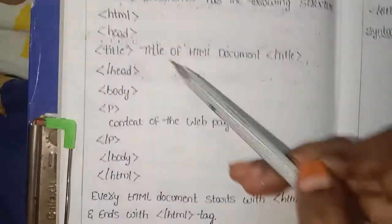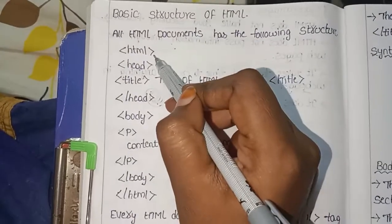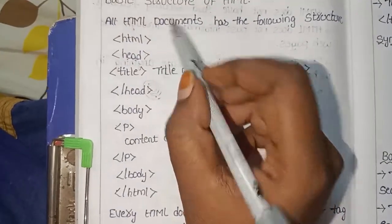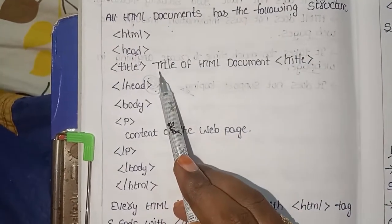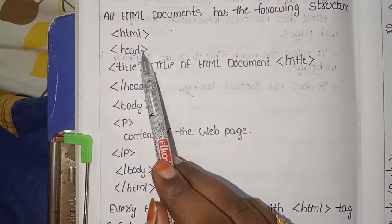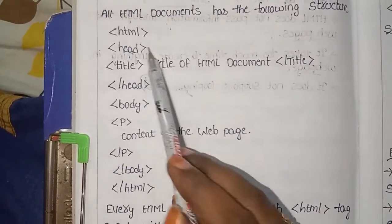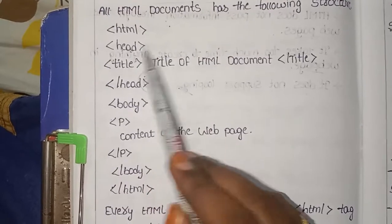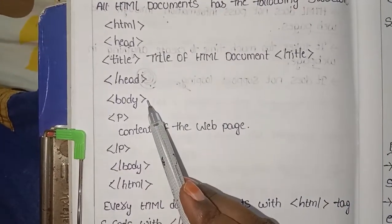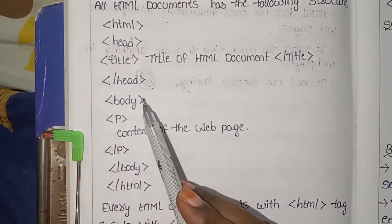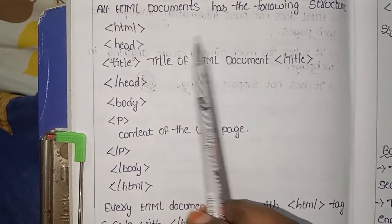First, we will discuss the HTML tag. We will open the HTML tag, then we will open the head tag, and then we will open the title tag. These form the head section. Next is the body tag.